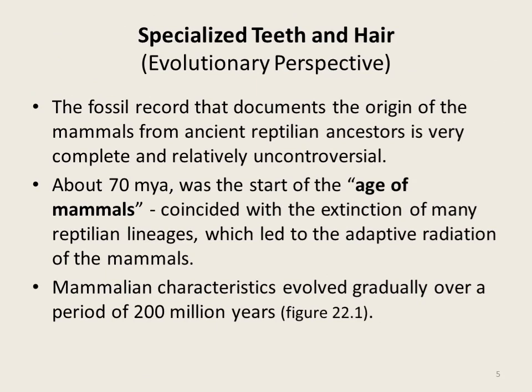About 70 million years ago begins what we call the age of mammals. Many reptilian lineages went extinct as a result of major mass extinction events, which started the process of adaptive radiation in mammals. The availability of new resources, habitats, niches, and environments previously occupied by reptilian lineages allowed mammals to diversify rapidly. The characteristics of modern mammals evolved gradually over a period of around 200 million years as a result of this adaptive radiation.